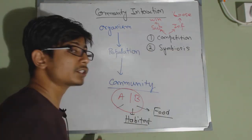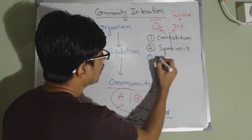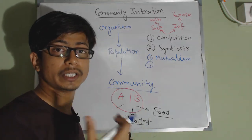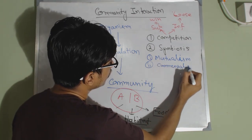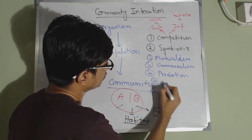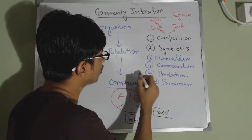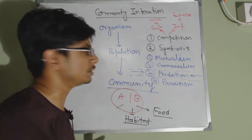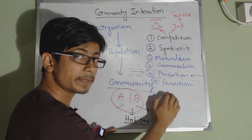The second type is symbiosis. Talking about symbiotic relationships between different communities, there are three types: one is mutualism, second is commensalism, and third is parasitism. Actually, predation does not belong to symbiosis — predation is completely separate. So the community interactions are: competition, predation, and symbiosis; and within symbiosis we have mutualism, commensalism, and parasitism.